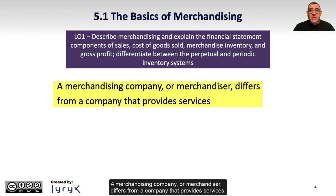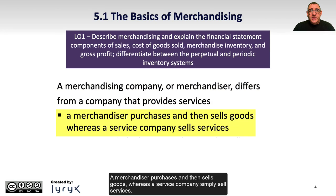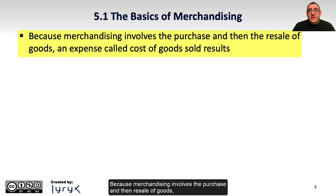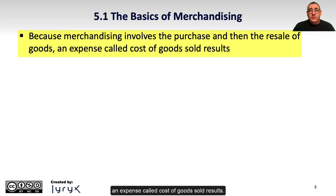A merchandising company or merchandiser differs from a company that provides services. A merchandiser purchases and then sells goods, whereas a service company simply sells services. For example, a car dealership is a merchandiser that sells cars, while an airline is a service company that sells air travel. Because merchandising involves the purchase and then resale of goods, an expense called cost of goods sold results.